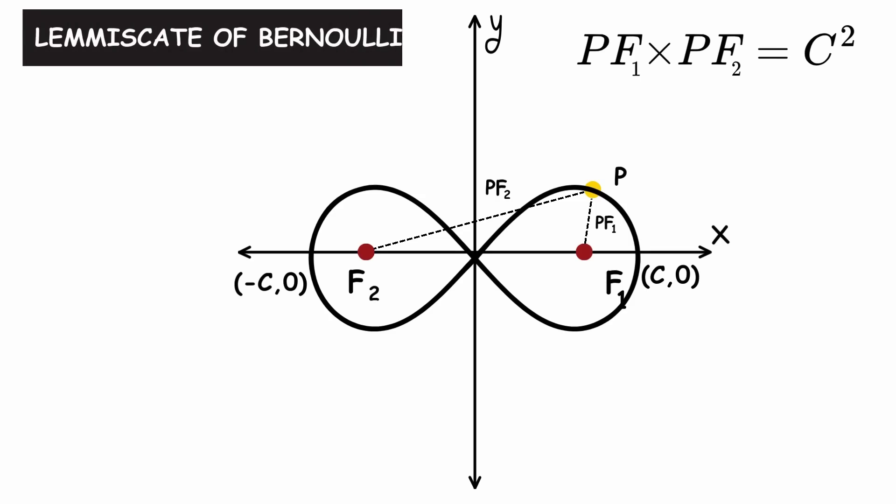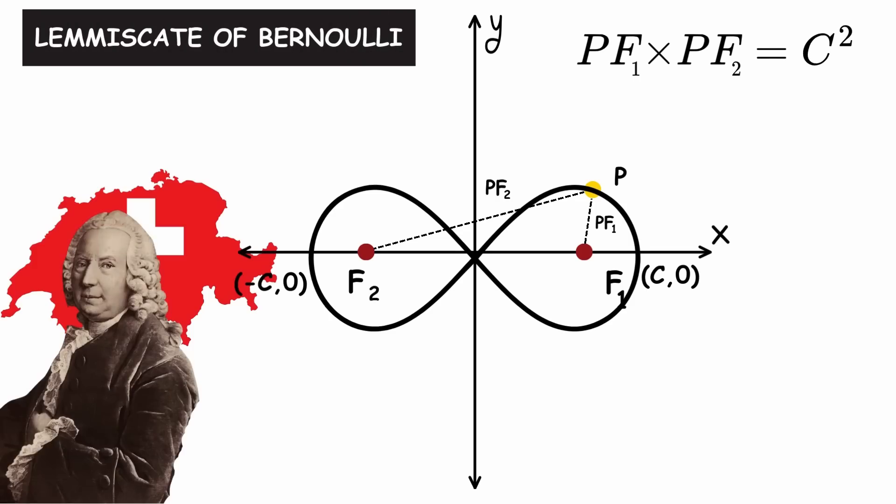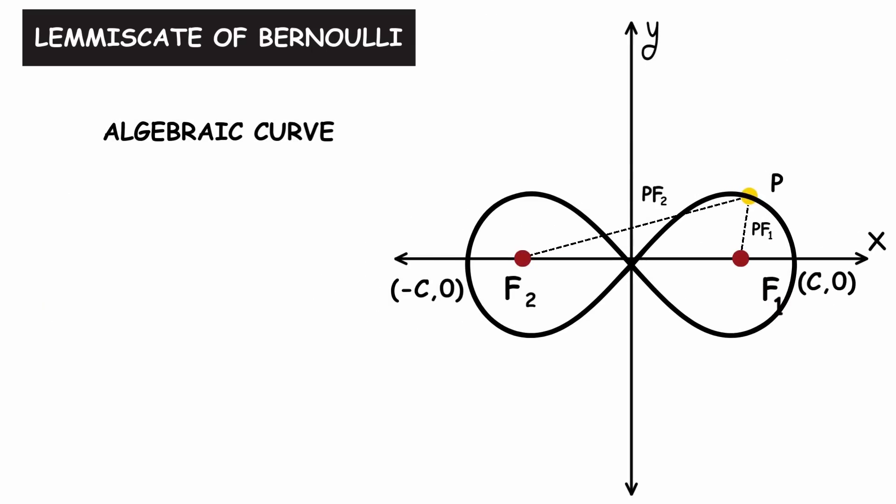This is called the Lemniscate of Bernoulli, named after Swiss mathematician and physicist Daniel Bernoulli. It is an algebraic curve, as it can be represented by this equation.